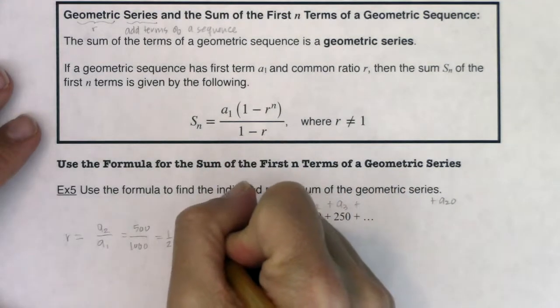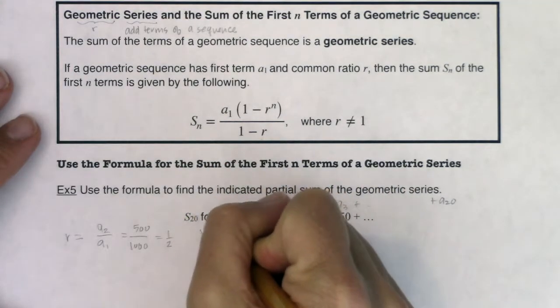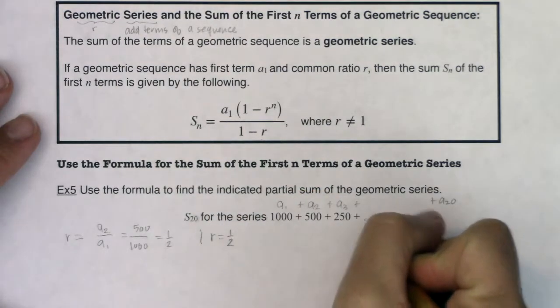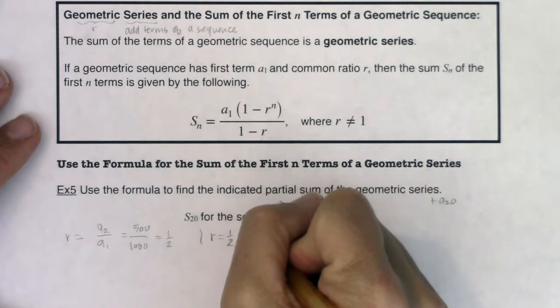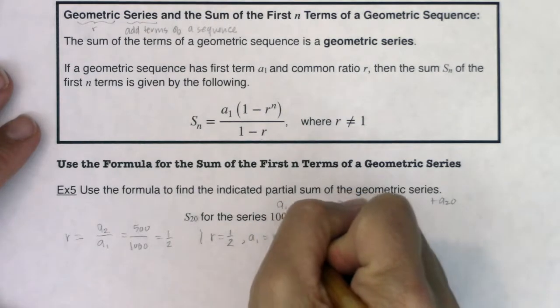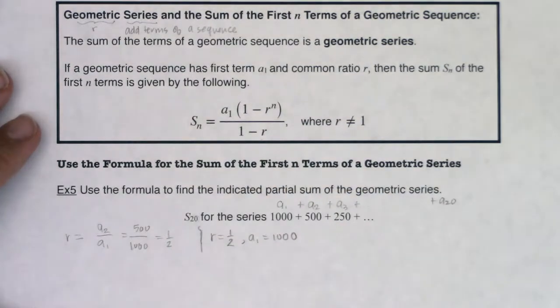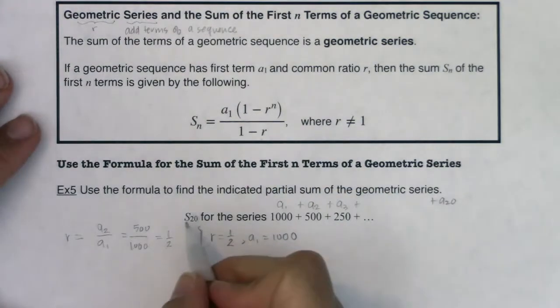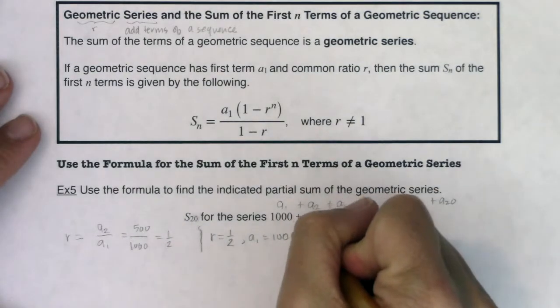So let's start to keep track of what I have. I know r is equal to 1 half. I know that a sub 1 is equal to 1,000. I'll put a little bigger separator bar there. And then specifically, I know that n is equal to 20.